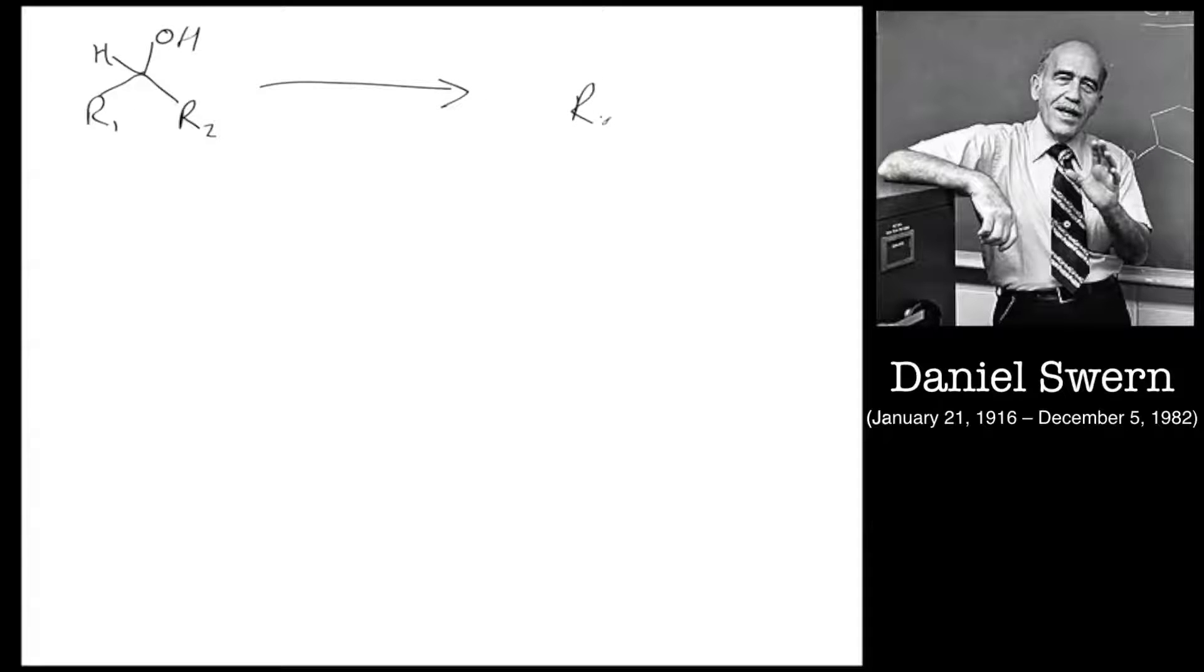Okay, we're going to talk about the Swern oxidation of alcohols. Basically, you're looking at an alcohol which can be represented as R1, R2, with an OH group. This is a secondary alcohol where R1 and R2 are both carbons, and that is going to react to form, in this case, a ketone.